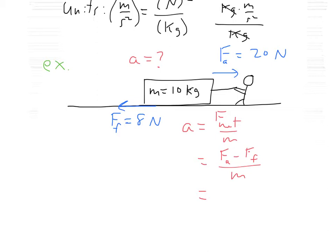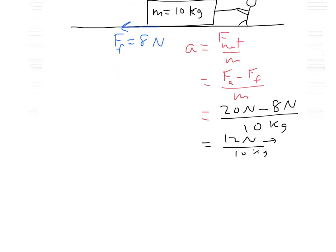And so that's going to equal, throw in our numbers here, 20 Newtons minus eight Newtons divided by 10 kilograms equals 12 Newtons to the right over 10 kilograms, which is going to be 1.2 Newtons per kilogram, which we know now is meters per second squared.